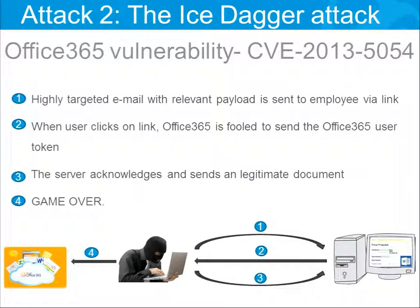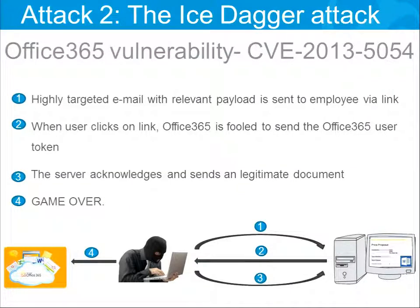We actually found it almost accidentally. What happened was a user was opening documents from a weird location — it seemed like a Tor server, and when we tried to open this link there was nothing there. After this occurred several times, we tried to understand what was going on and looked at the traffic itself. One of the members of the research group spotted a suspicious header — it looked like it was coming from SharePoint.com, which didn't make sense because SharePoint was not in the process. From there, we started investigating and eventually, with Microsoft's help, we understood the attack.